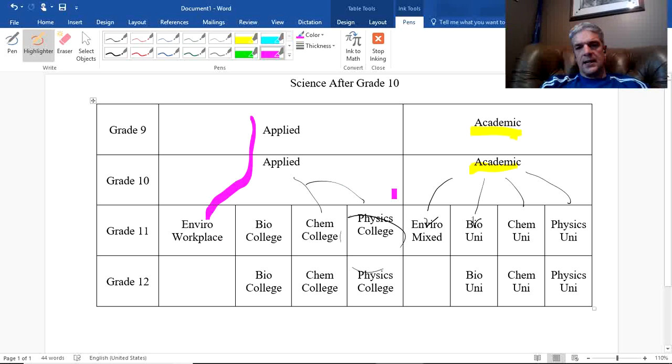You are technically allowed to take the mixed level if you wanted to from the applied. But I don't recommend it. I think it would be better to take the workplace in that side. Once you get to grade 12, you'll notice that the same courses are offered for bio, chem, and physics. But there is no grade 12 environmental science. It just ends at the end of grade 11. And just for those of you wondering what the heck is environmental science?